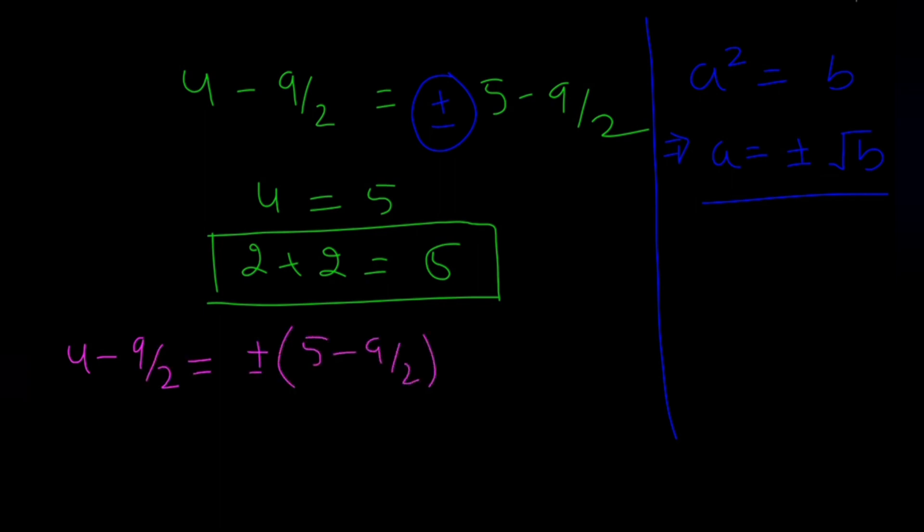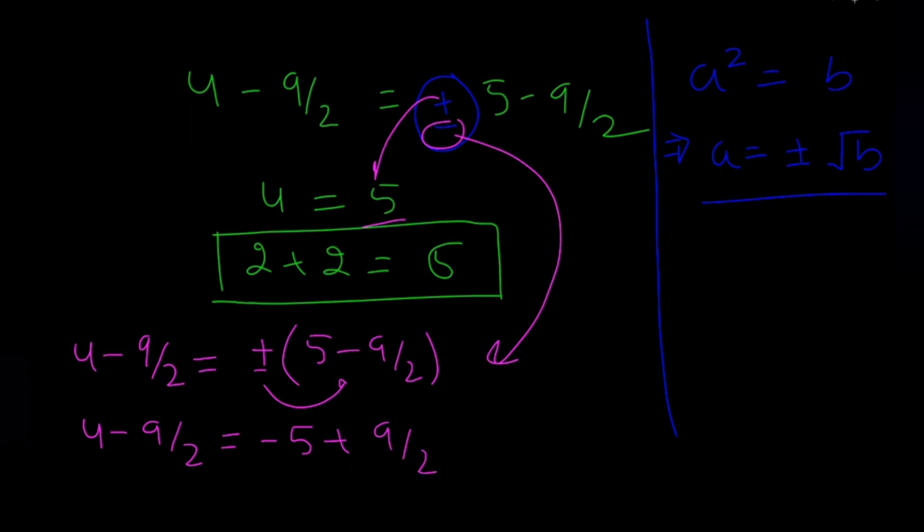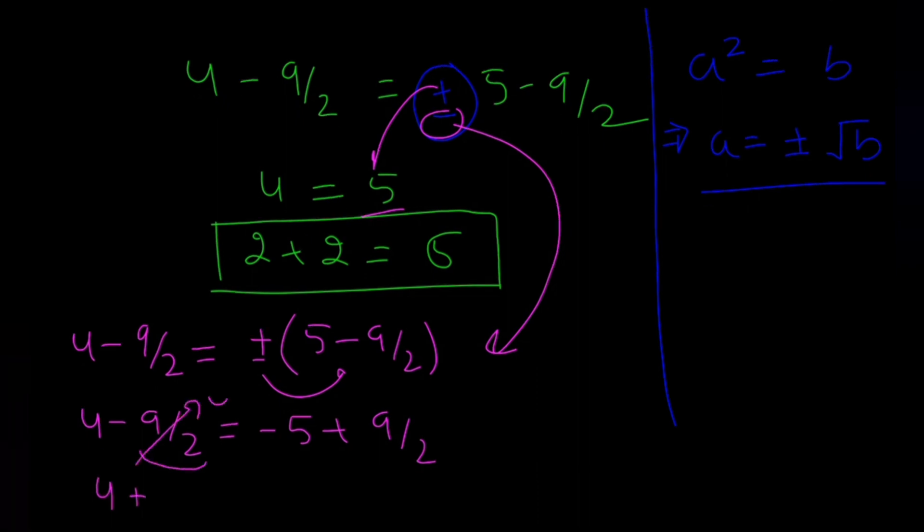And since this term here is plus term, let me solve for minus here. So 4 minus 9 by 2 equals minus of 5, and this becomes plus of 9 by 2. Add 9 by 2 on both sides. What I will get? I will get 4 plus, this will become 0, and this will become equals minus 5 plus 9 by 2 plus 9 by 2.